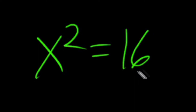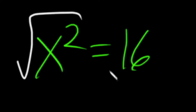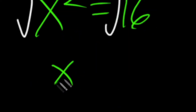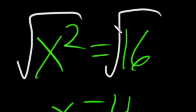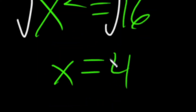Number 3. Say we have x squared equals 16. Seems straightforward — we take the square root of both sides, and x equals 4, right? Almost. When we take the square root of a number, we get both the positive and the negative values. So x doesn't equal just 4, but it equals plus or minus 4.